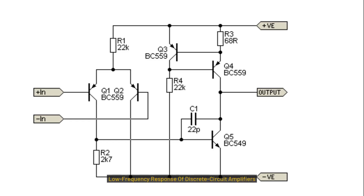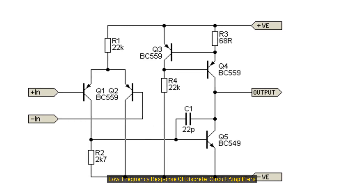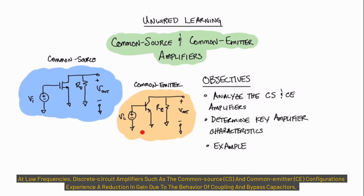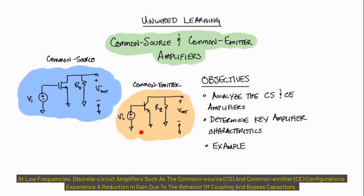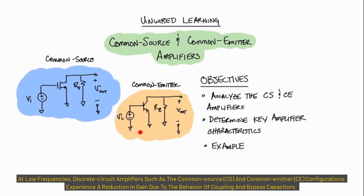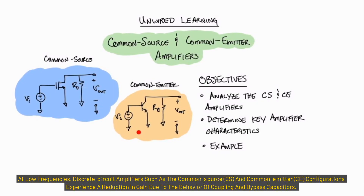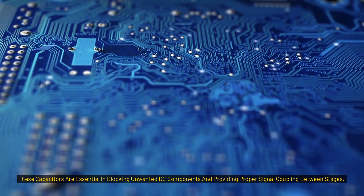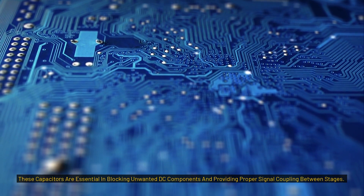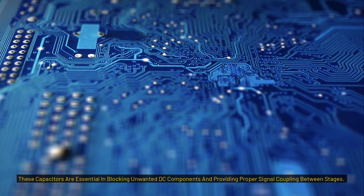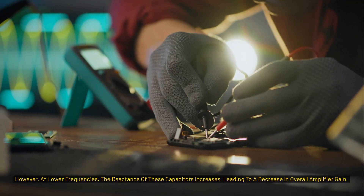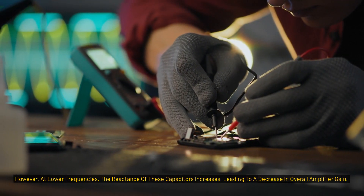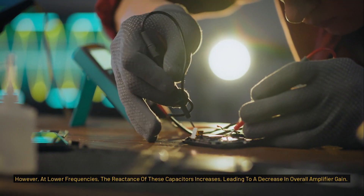At low frequencies, discrete circuit amplifiers such as the common source (CS) and common emitter (CE) configurations experience a reduction in gain due to the behavior of coupling and bypass capacitors. These capacitors are essential in blocking unwanted DC components and providing proper signal coupling between stages. However, at lower frequencies, the reactance of these capacitors increases, leading to a decrease in overall amplifier gain.